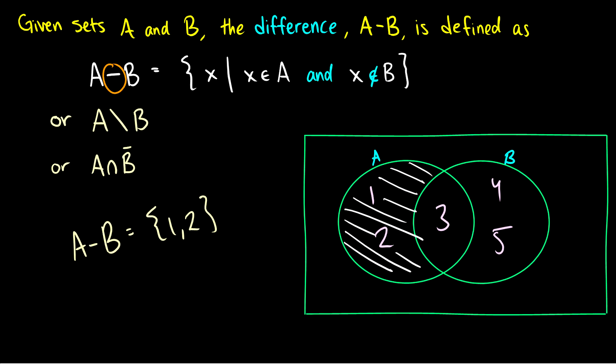3 is in A but 3 is in B, therefore we're going to subtract that 3 and just be left with 1 and 2. That's how I like to think of it. It's a nice way to ease into it without any formal definitions.